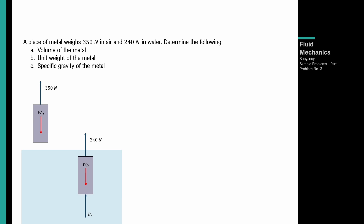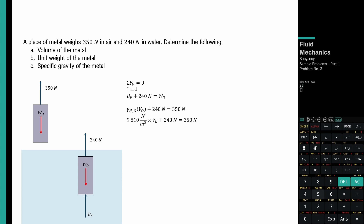So summation ng force vertical equal to 0 — upward force equal sa downward forces. Buoyant force plus 240 is equal to weight ng object. Buoyant force equals unit weight ng water times volume displaced, which is volume ng metal. So: 9810 × V_metal + 240 = 350. Therefore: volume ng object = (350 − 240) / 9810 = 0.0112 cubic meters — store ko sa A.